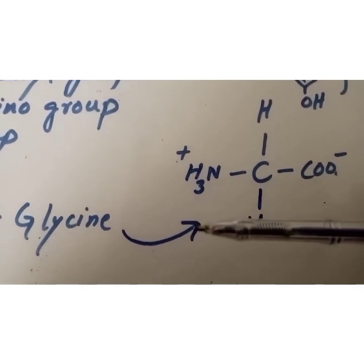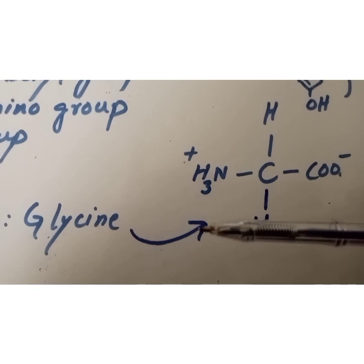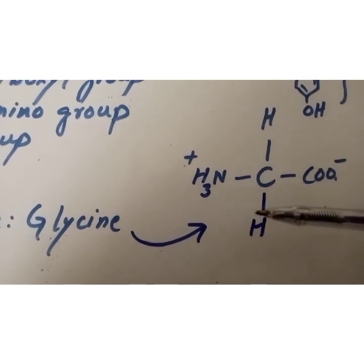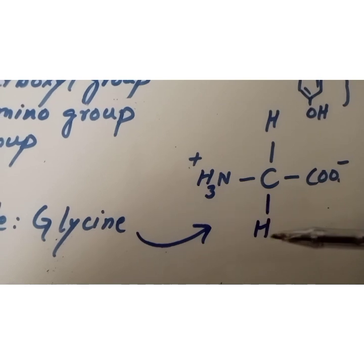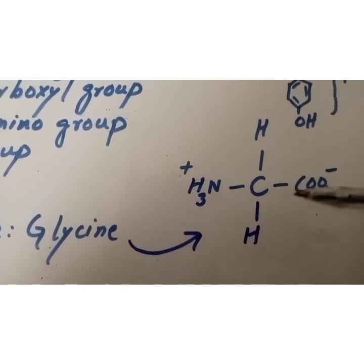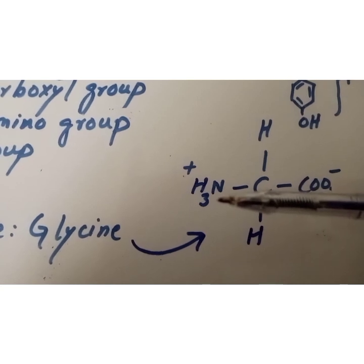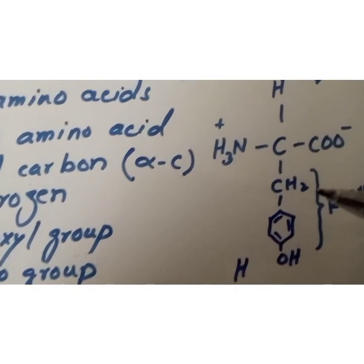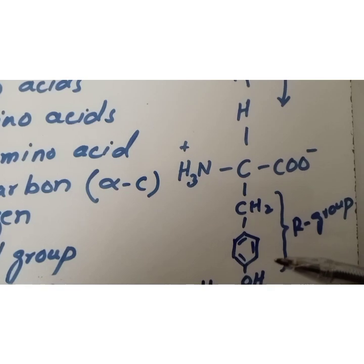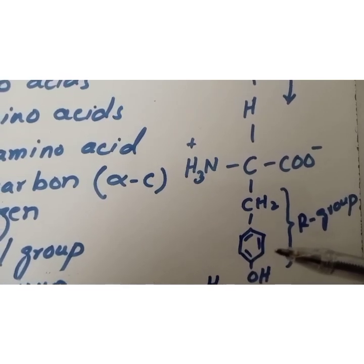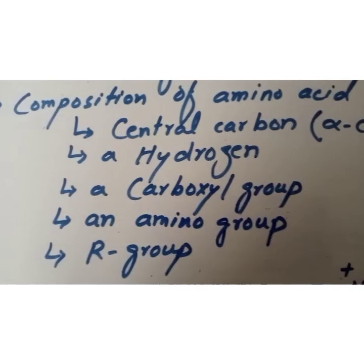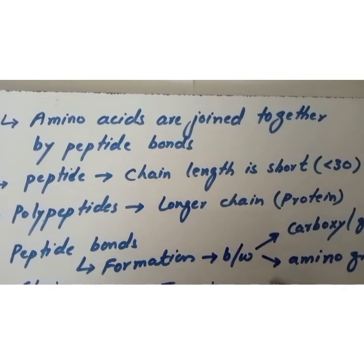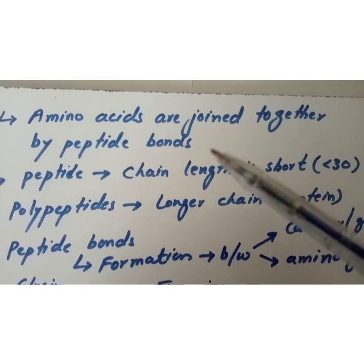Another example is glycine, which is the simplest of these 20 kinds of amino acids. Here, the alpha carbon is attached with hydrogen on both sides — instead of an R group, hydrogen is present. That is the carboxyl group and that is the amino group attached to the alpha carbon.